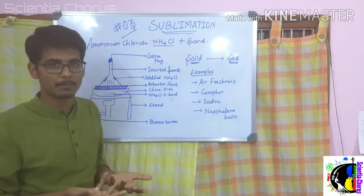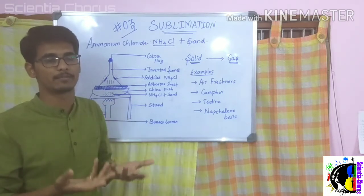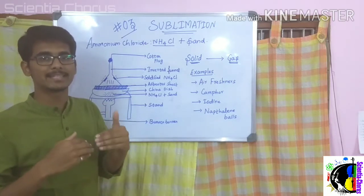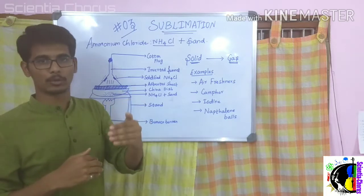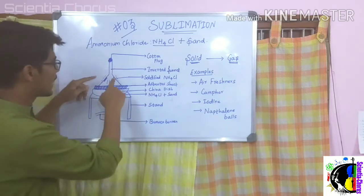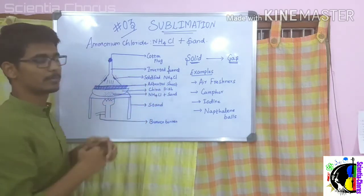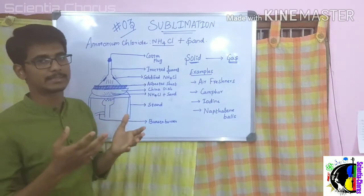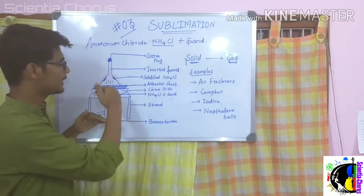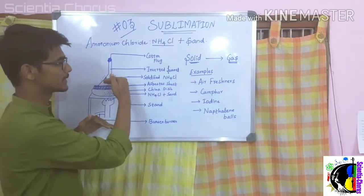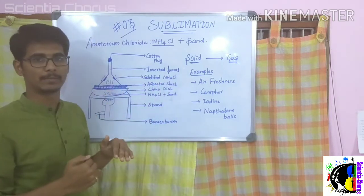The ammonium chloride vapor gets condensed and solidified on the funnel walls. You then obtain the same solid ammonium chloride. Thus, using the sublimation process, we are separating the useful substance — ammonium chloride — from the impurity sand.